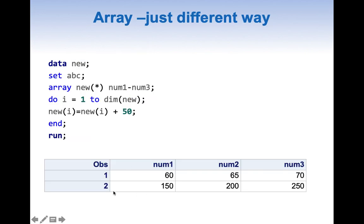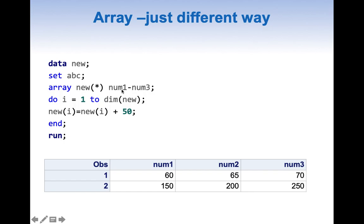The results are clear — we have added 50 to all 3 variables. This array can be represented in a different way. This alternative array code has 3 differences: the first is an asterisk, the second is having a dash between variables or elements, and the third is using the DIM function on the array name.